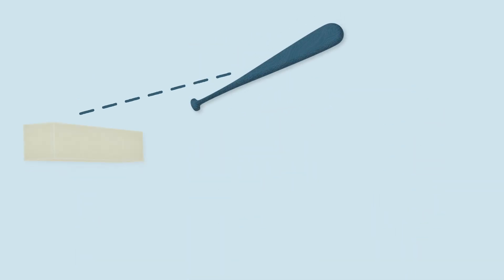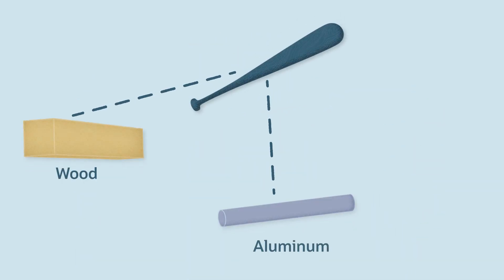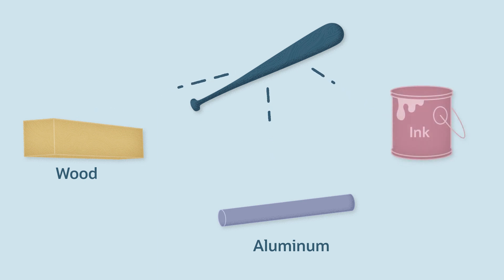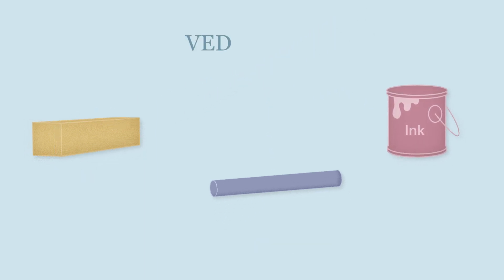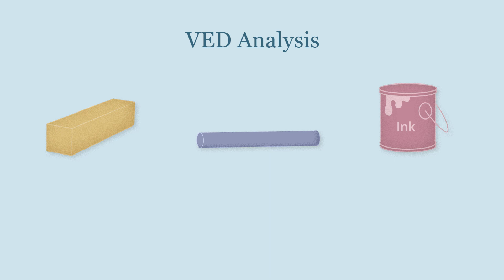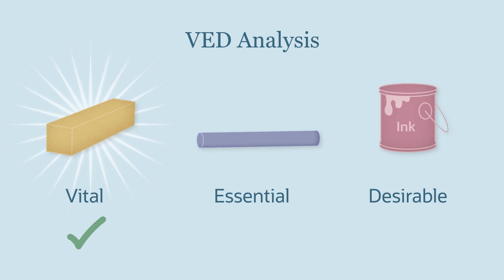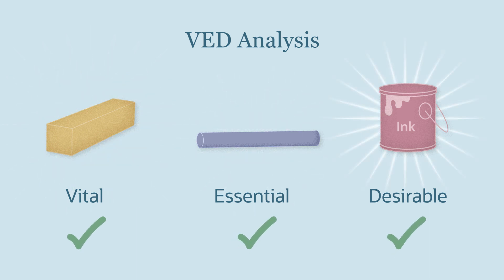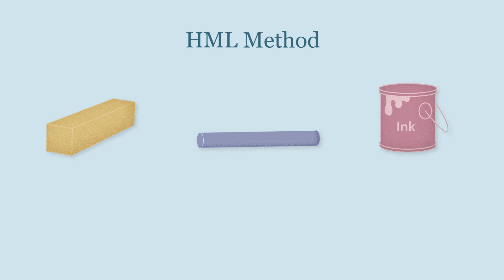Manufacturers often use methods based on the cost and importance of parts and materials for making goods. VED analysis separates items into vital, essential, and desirable based on what's needed to make the company's most important products. Or there's the HML method to sort supplies into categories of high, medium, and low cost.